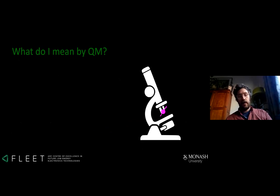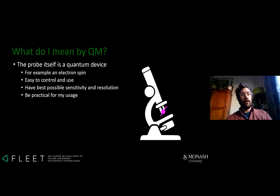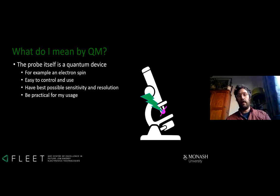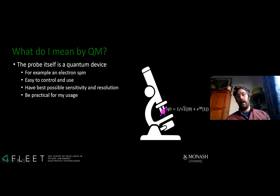For my definition of quantum microscopy using a spin, I need to be able to control and read out the spin, achieve the best possible sensitivity and resolution, and it has to be practical. The way I use it: I shine a control pulse to prepare my spin into a quantum state that's sensitive to its environment, let it interact with its environment picking up a phase, then collapse the wave function, read out my state, and use that to form my image.